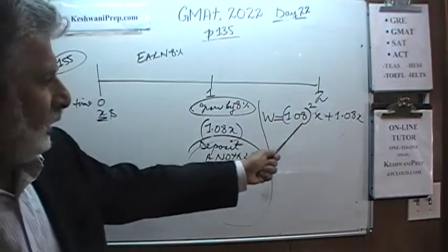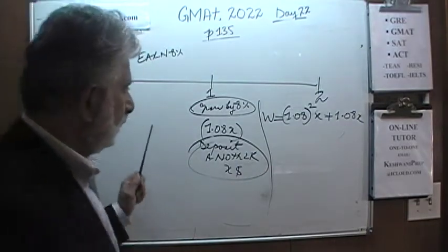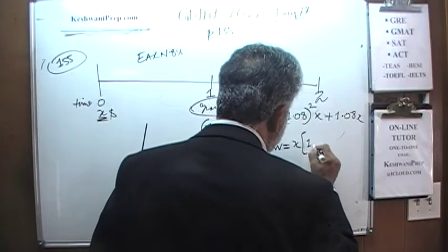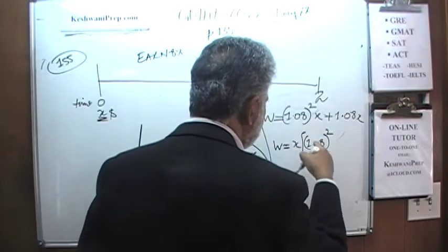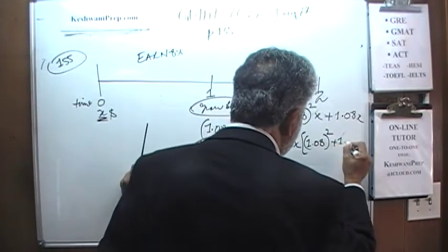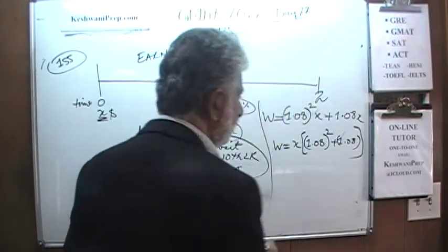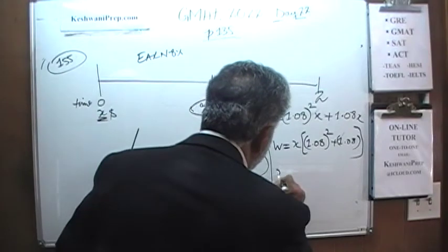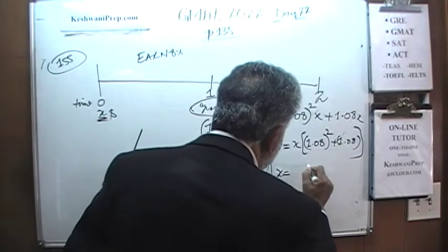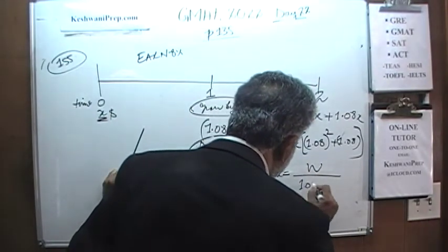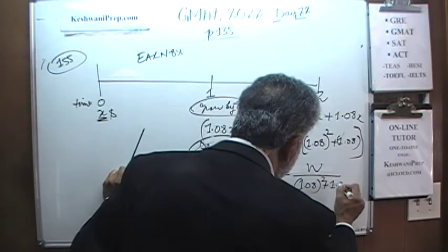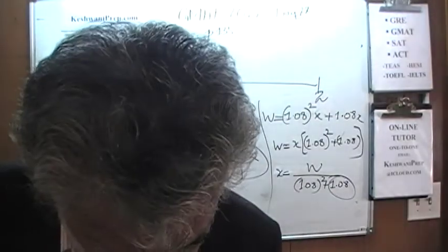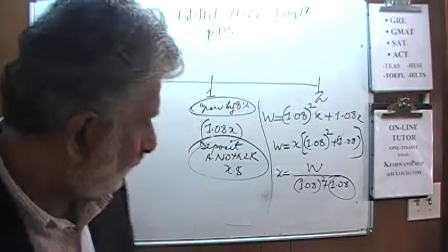The question is: what is x in terms of w? Well, w equals x times (1.08 squared plus 1.08). Since we want x in terms of w, we divide w by that quantity. So x equals w divided by (1.08 squared plus 1.08). We hope one of the answer choices matches — and it does. The answer is D.